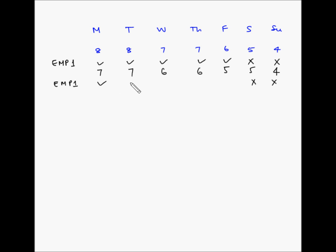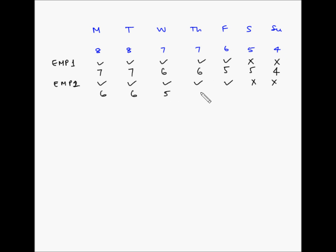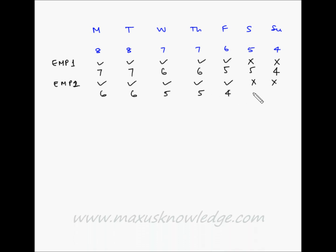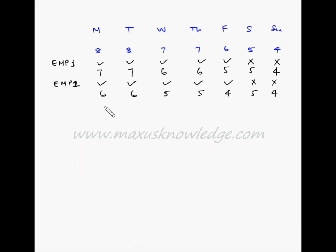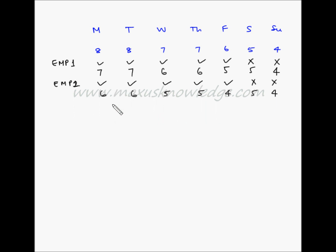Employee 2 will work on the remaining days. Based on this schedule for employee 2, the net requirements become: Monday 7-1=6, Tuesday 7-1=6, Wednesday 6-1=5, Thursday 6-1=5, Friday 5-1=4, and Saturday and Sunday remain as they are.